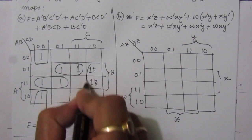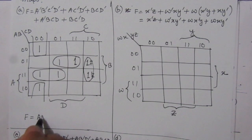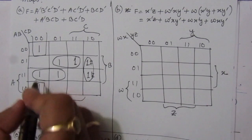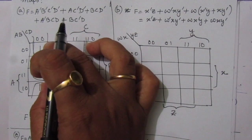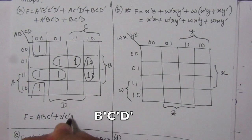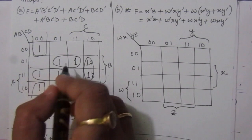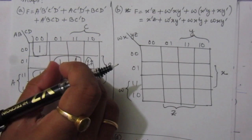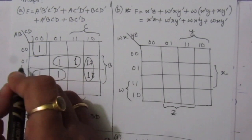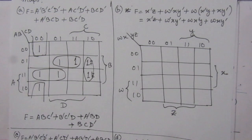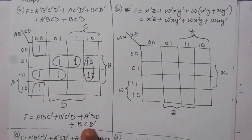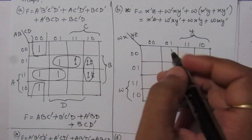Now combining the groups: the first group gives us A B C-bar; the second term gives us A-bar C-bar D-bar; the third term gives A-bar B D; and the fourth term gives B C D-bar. So the simplified expression using the four-variable map is: F = ABC̅ + Ā C̅D̅ + ĀBD + BCD̅.